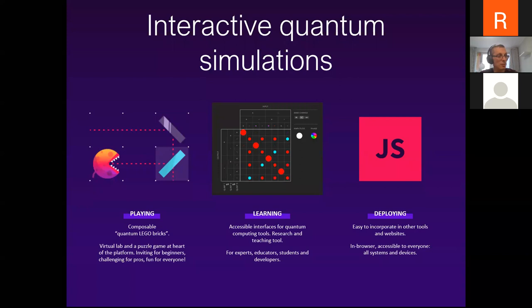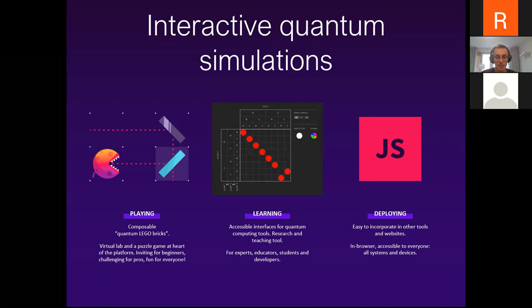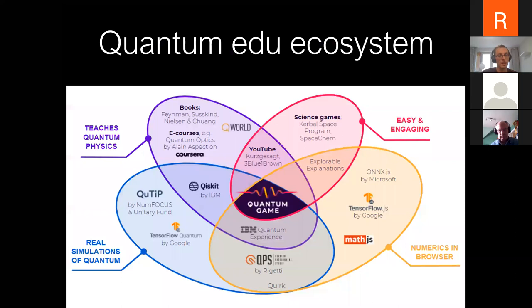What is the quantum game project? Basically there are three parts. One is a game — we want to make it as simple as possible for people to interact with the quantum world, with a quantum Lego block setup. The second is various resources for learning, more advanced tools for interacting with the quantum world, displaying quantum states and operators. The third is various ways to include such things in interactive slides, blog posts, and slide decks.